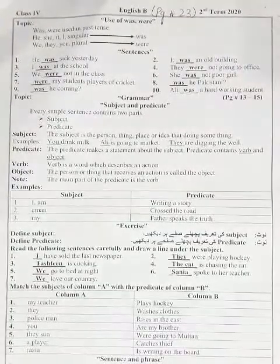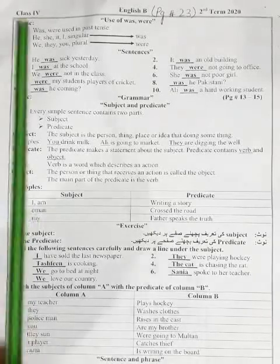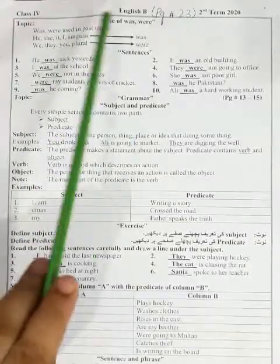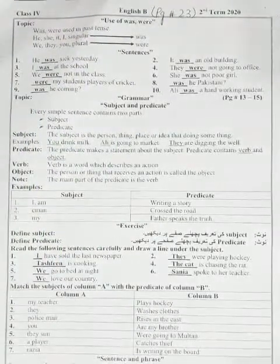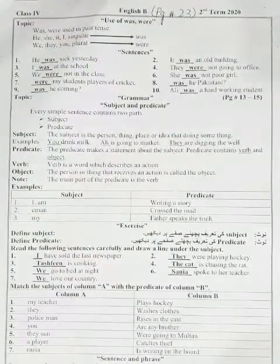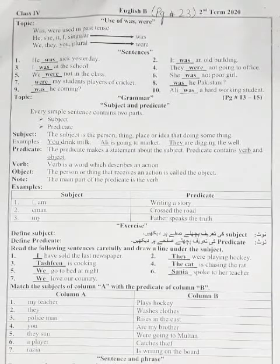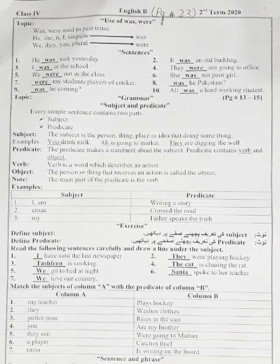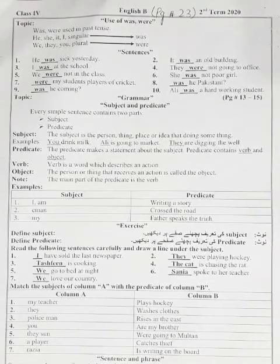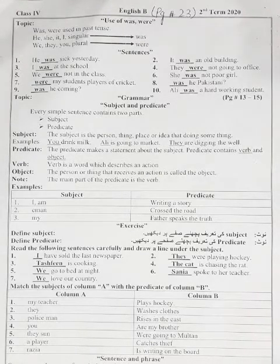Use of 'was' word. Our next topic is use of 'was' word. 'Was' is used in past tense. Students, you know — تھا، تھے ماضی کی حالتوں میں استعمال ہوتے ہیں۔ جو گزرا ہوا زمانہ ہوتا ہے اس کے لئے 'was' اور 'were' استعمال ہوتا ہے۔